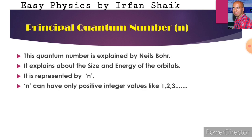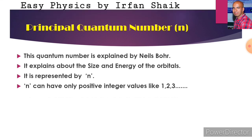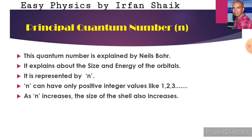Small n can have only positive integers like 1, 2, 3, 4, 5 and so on. As n increases, the size of the shell also increases. That means as the value of n increases, its size also increases.